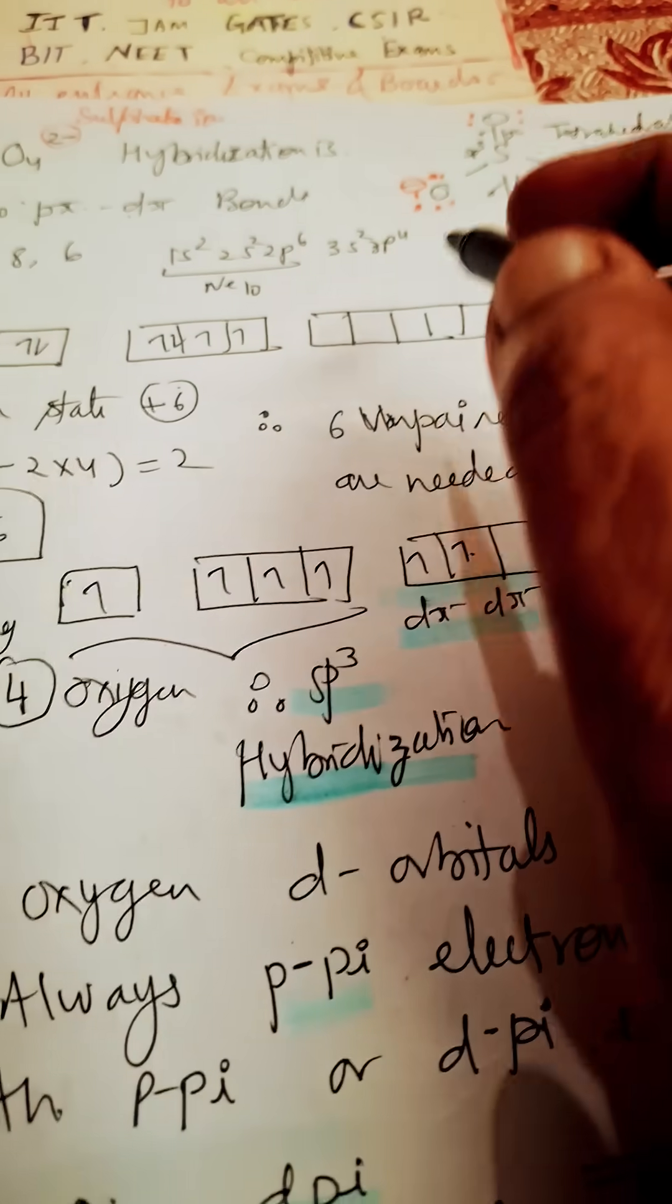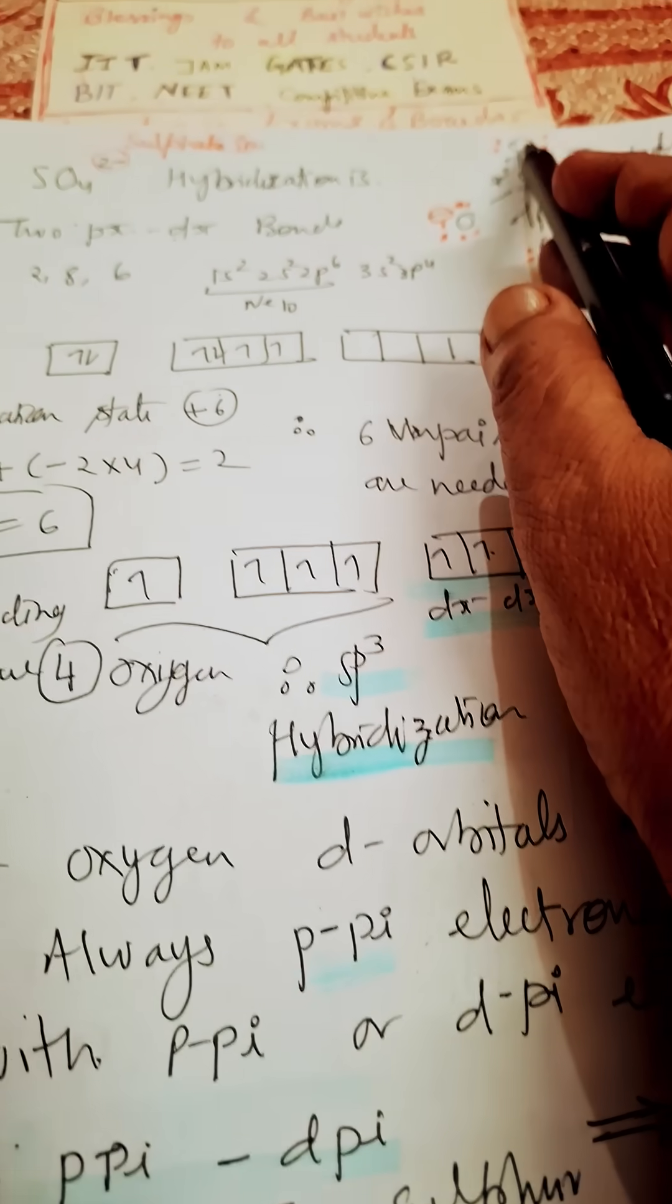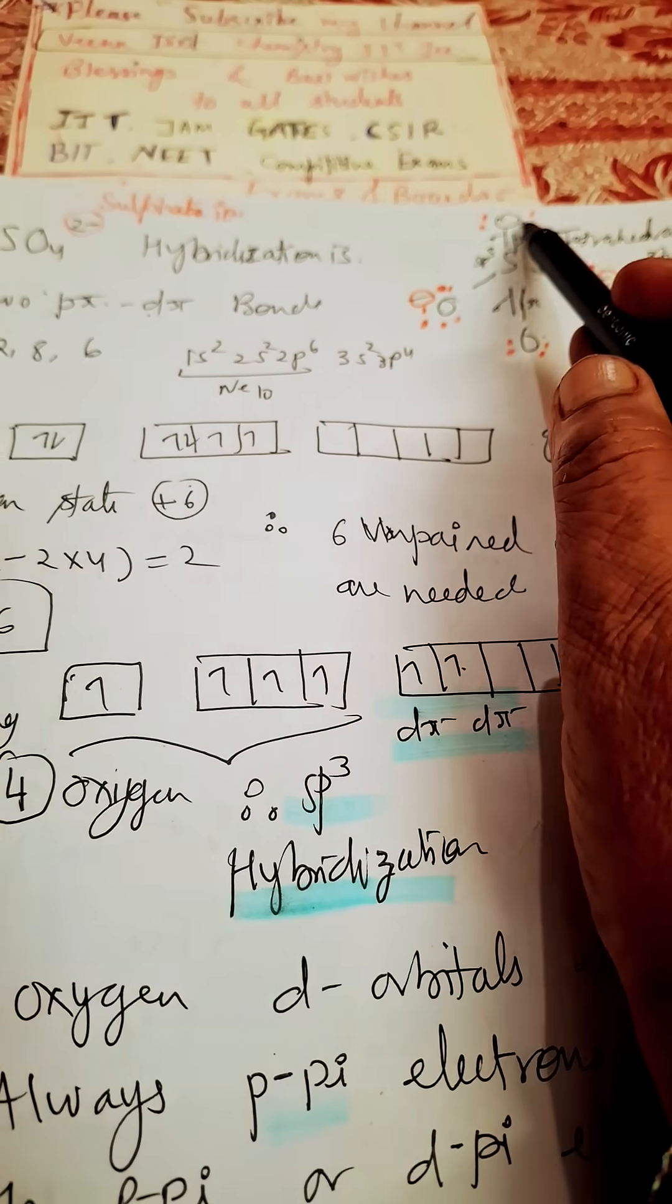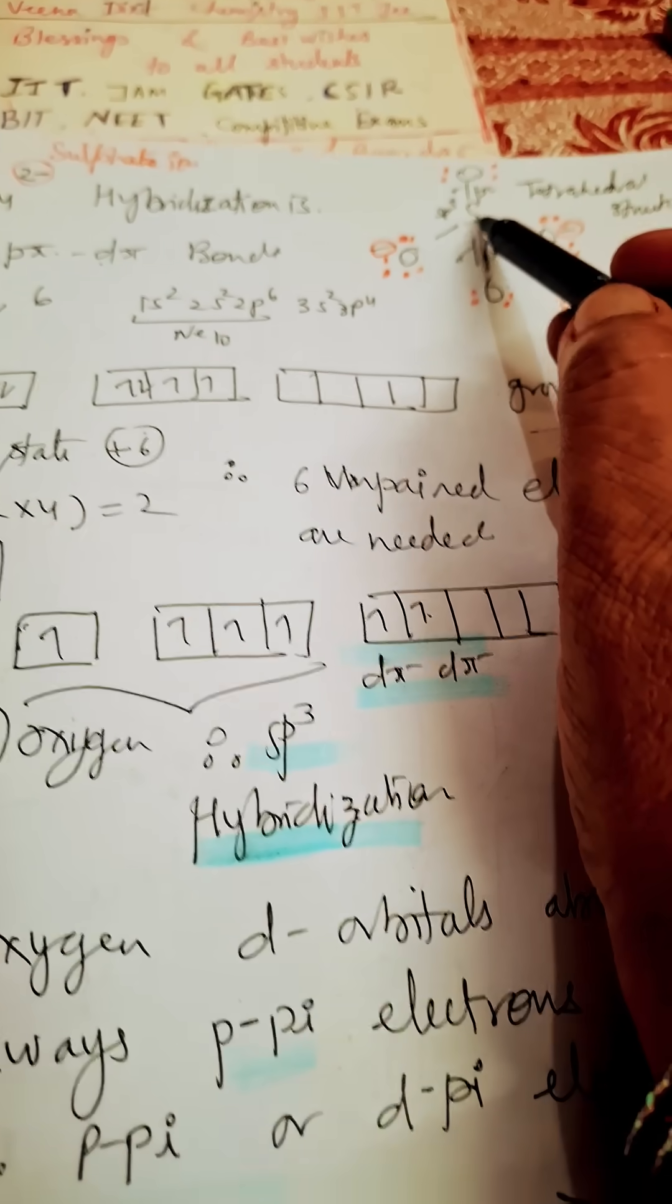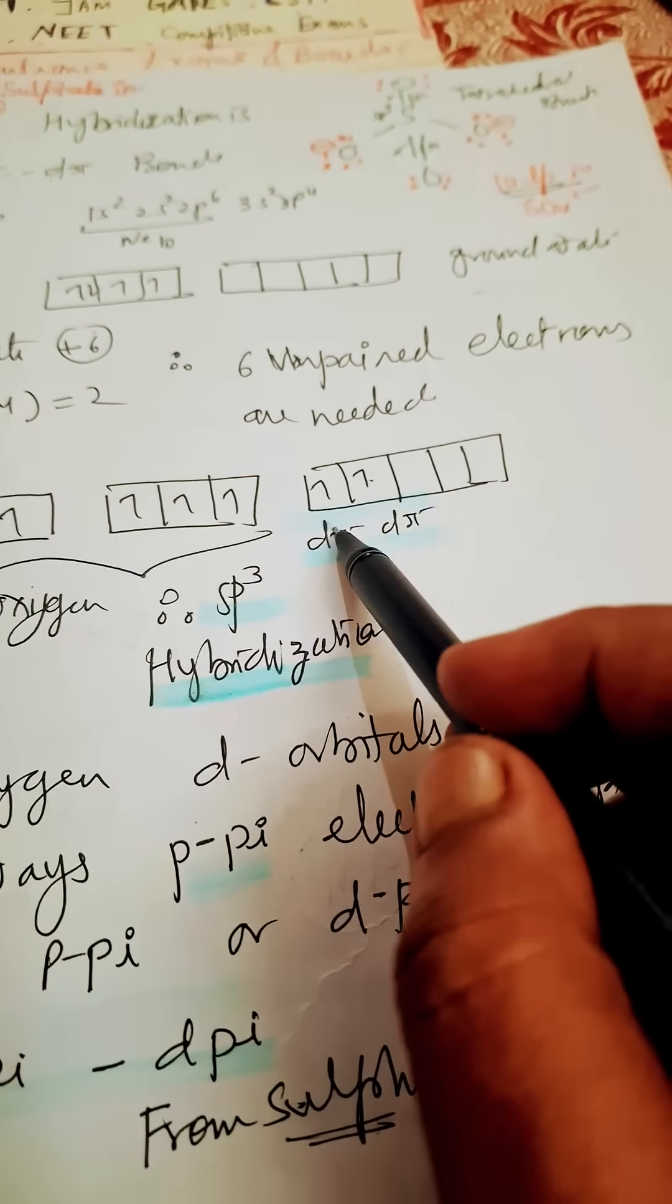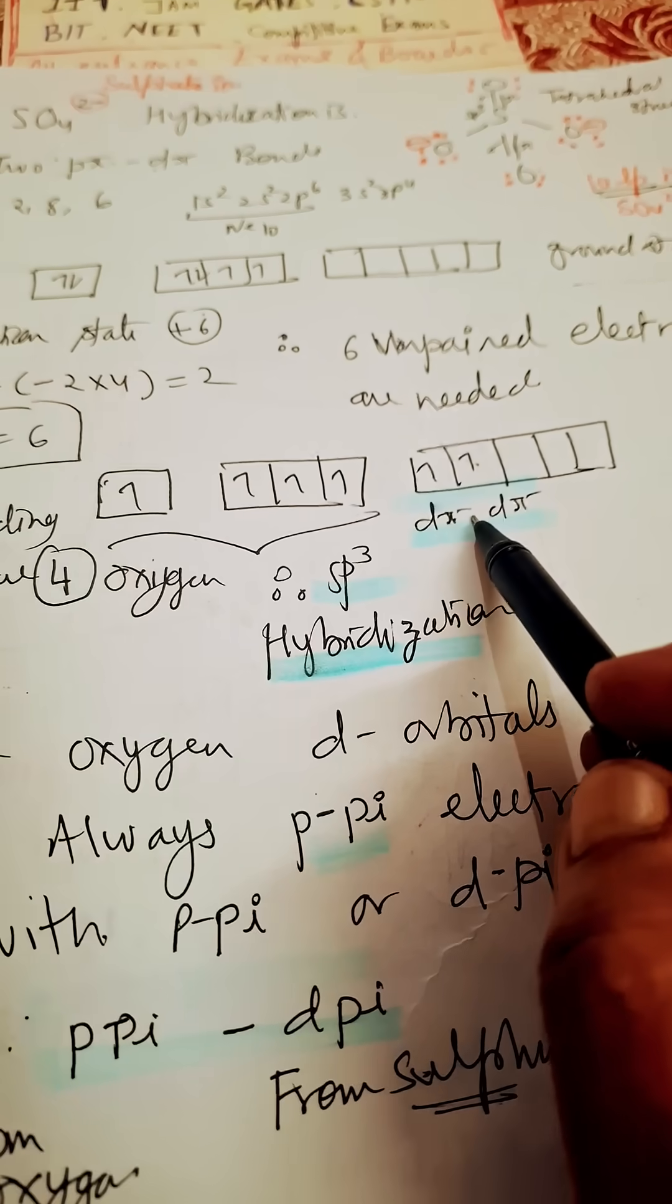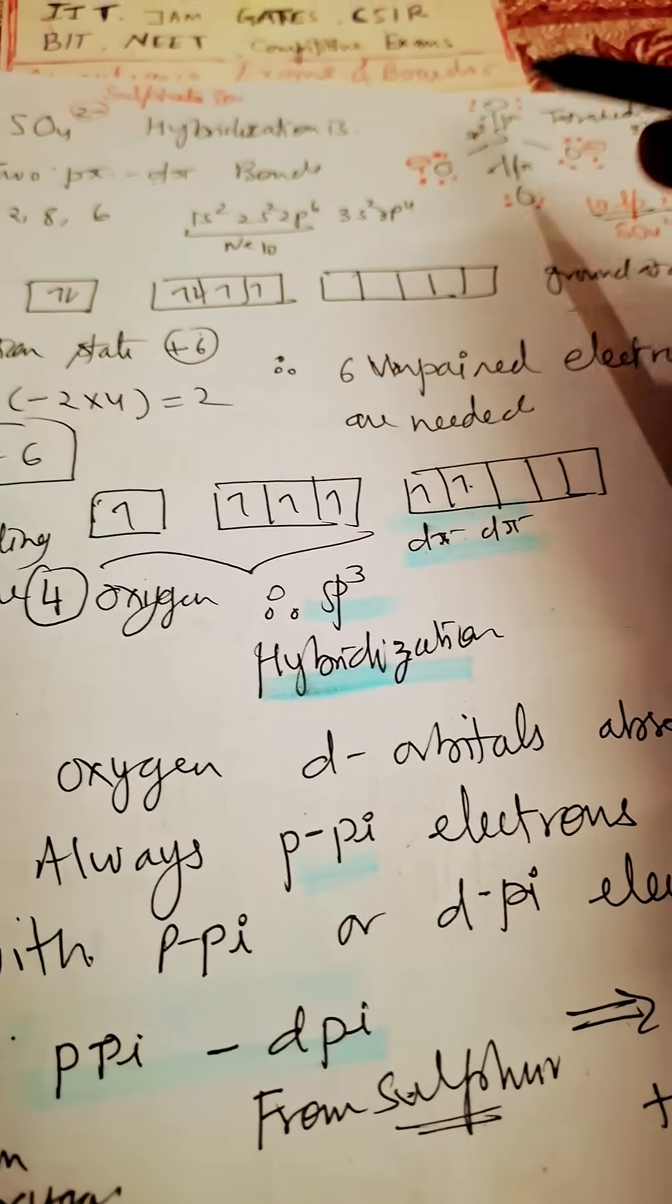...and this pi bond is formed by the electrons of oxygen present in p orbital, and this is formed by the electrons of sulfur present in d orbital. That is why we call it d-pi p-pi bonding, okay?